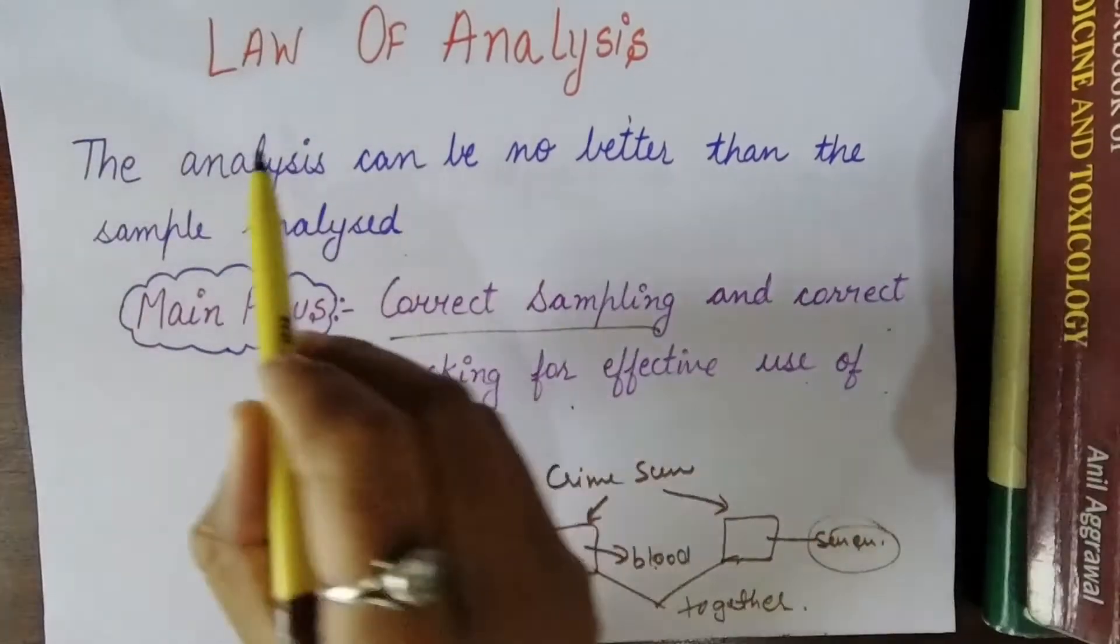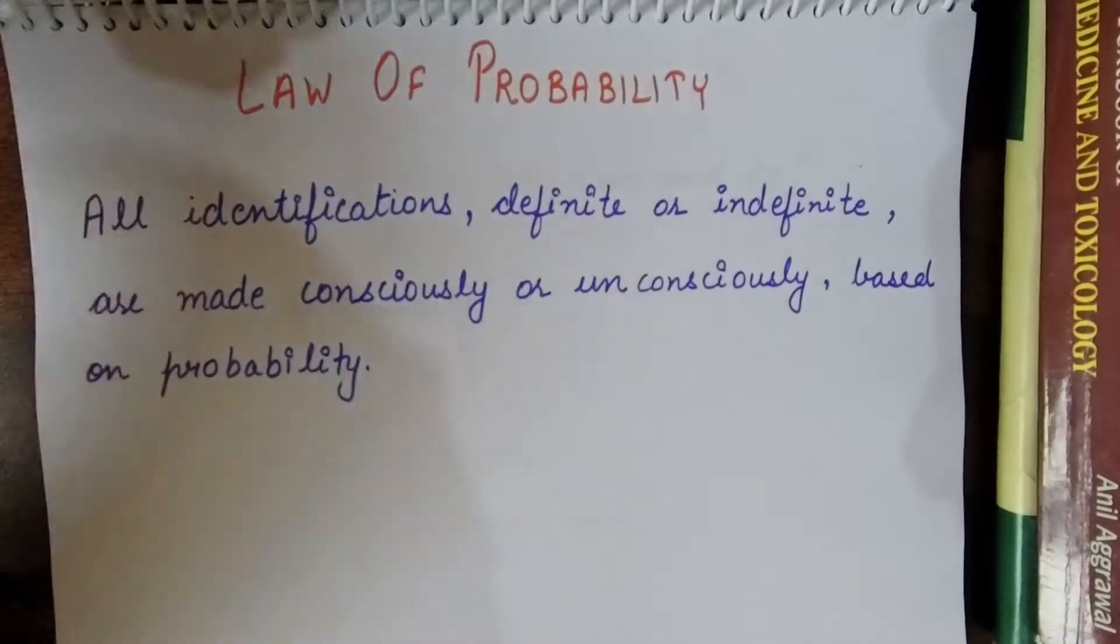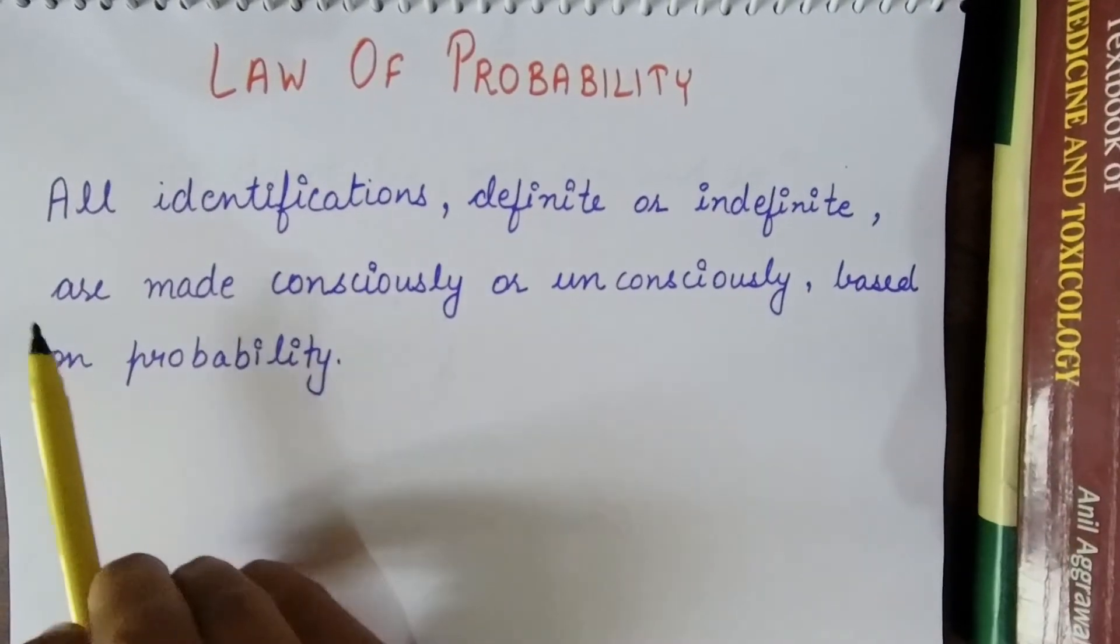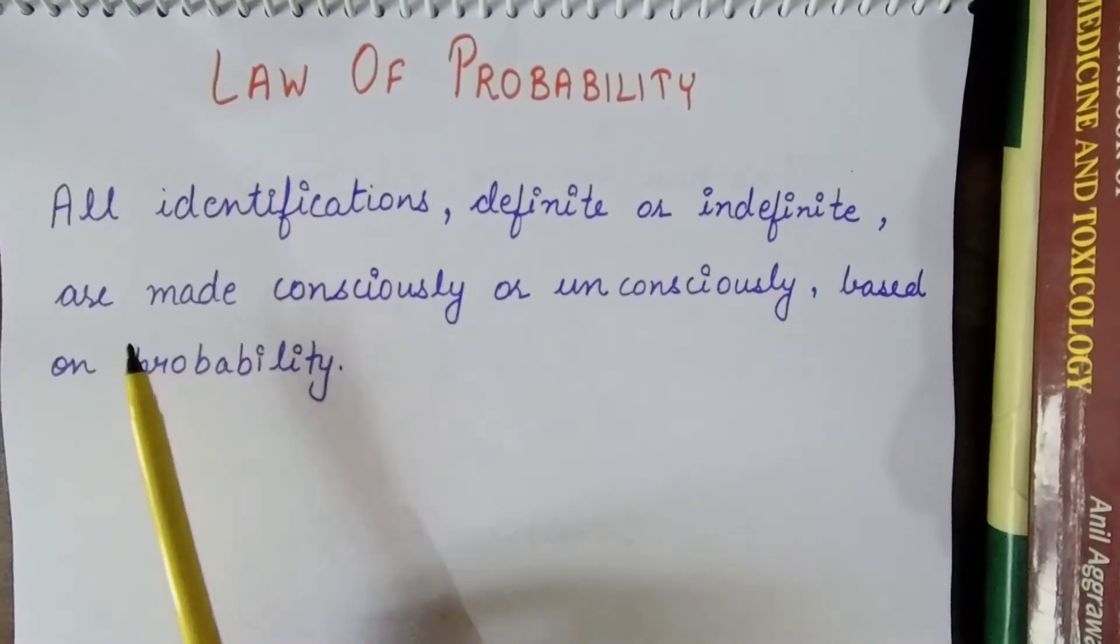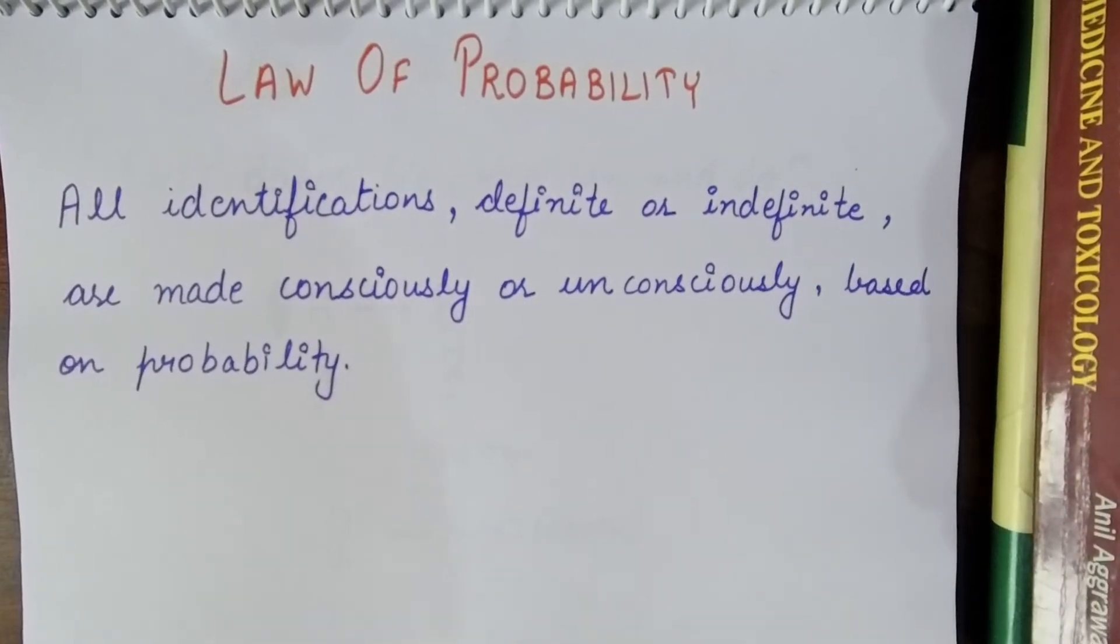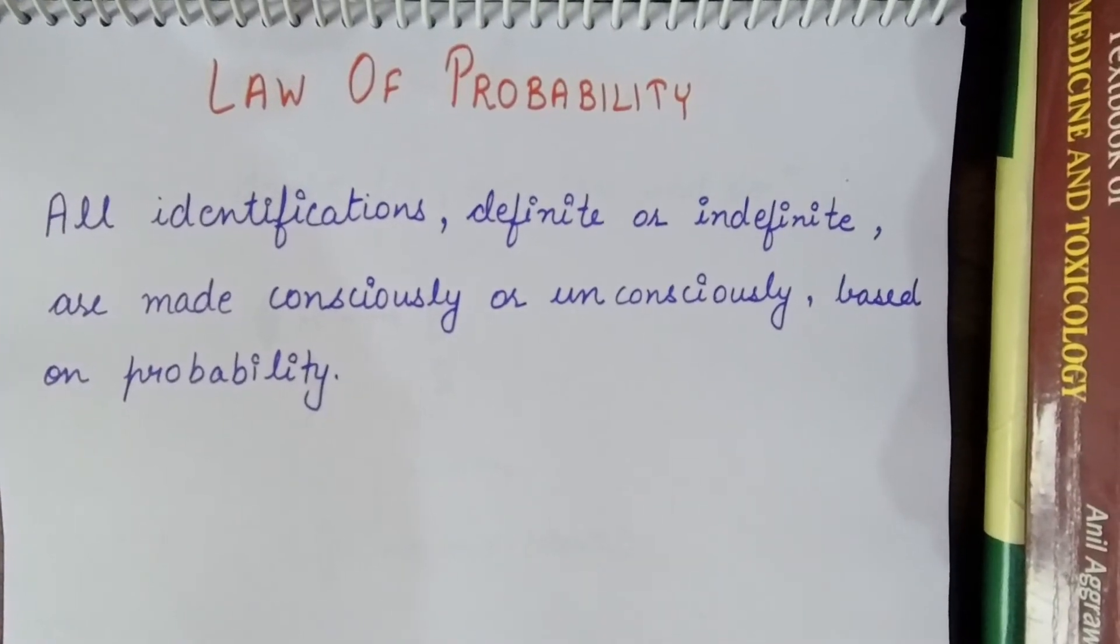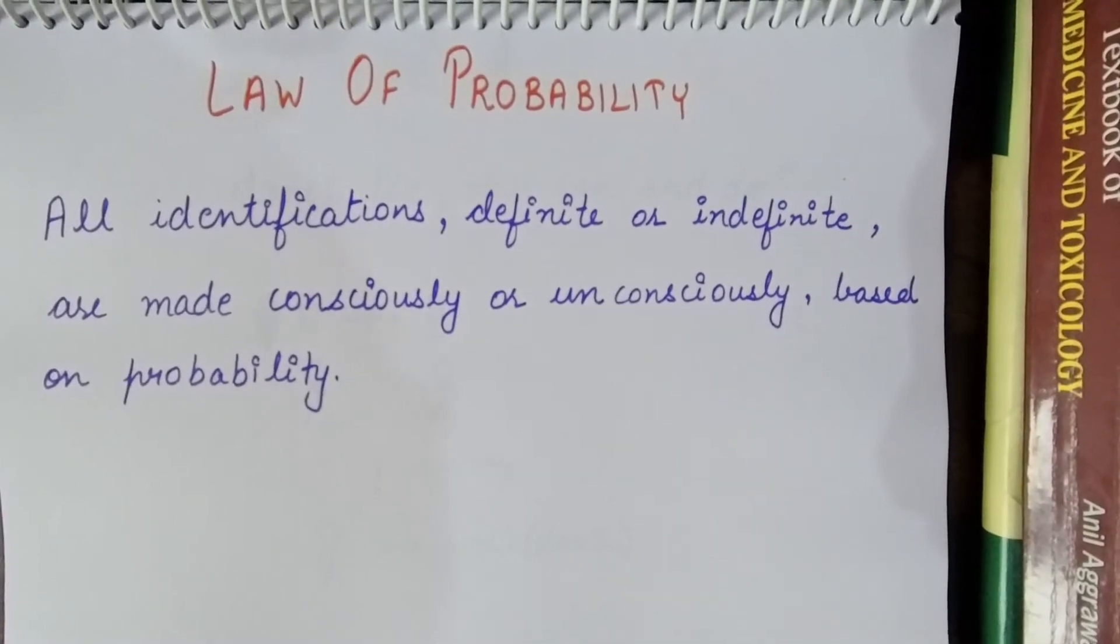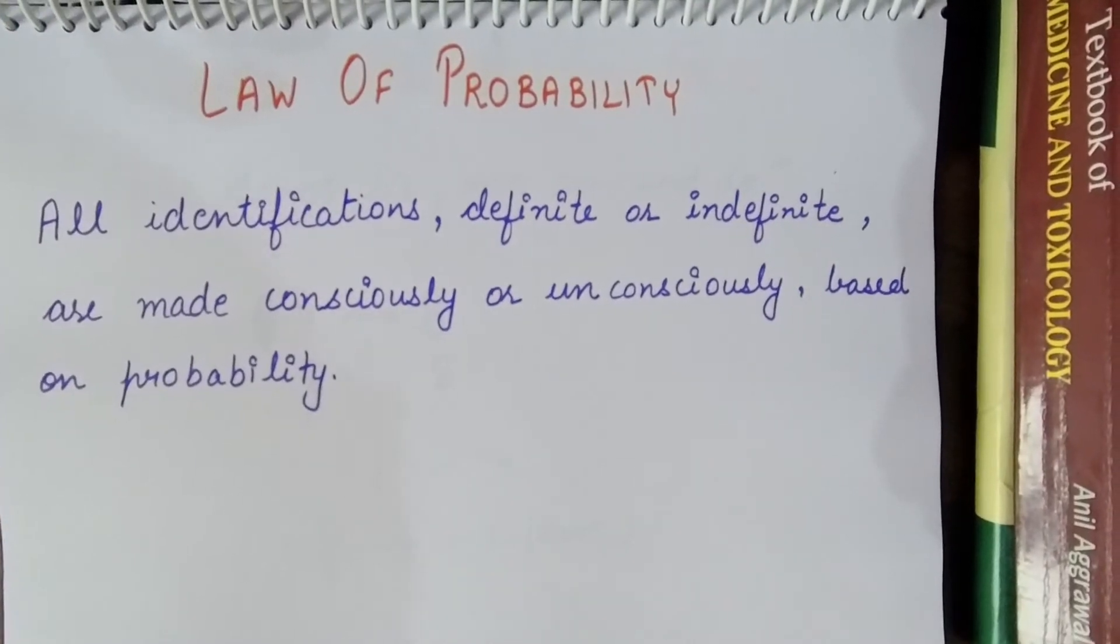Next is Law of Probability. It says that all identifications, definite or indefinite, are made consciously or unconsciously based on probability. Actually, this law of probability is used in forensic statistics when a hypothesis has to be made, as all conclusions derived from an analysis are dependent on methods used. Law of probability is used in mathematics terms.